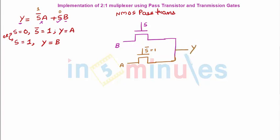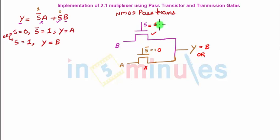Let's quickly verify: when S = 1, S̄ = 0 — the B-transistor is ON, the A-transistor is OFF, and Y = B. When S = 0, S̄ = 1 — the B-transistor is OFF, the A-transistor is ON, and Y = A. This is exactly what we want, so this is a 2-to-1 MUX using NMOS pass transistors.